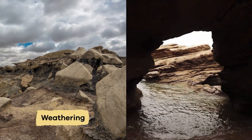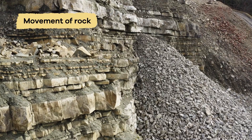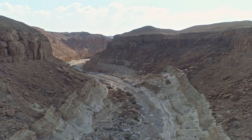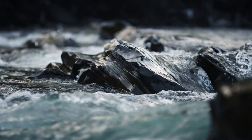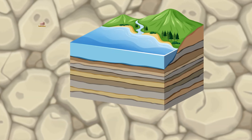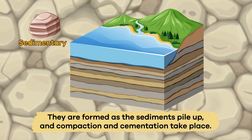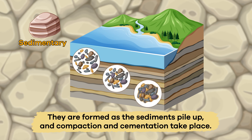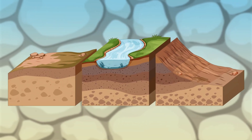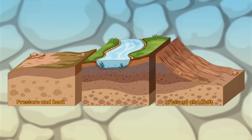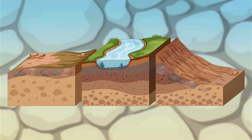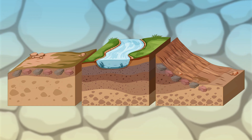Step 3: Weathering, erosion, and movement of rock on the Earth's surface carry sediments of rocks to low-lying places and bodies of water. Step 4: Sedimentary rocks are formed as the sediments pile up and compaction and cementation take place. Step 5: After a long time period of pressure and heat, the igneous and sedimentary rocks buried in the Earth's crust change into metamorphic rocks.